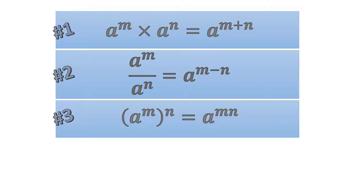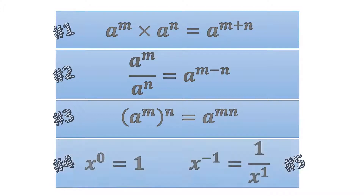Our fourth and fifth rules work in tandem with each other. The fourth states that x to the power of 0 equals 1, and the fifth states that x to the power of minus 1 equals 1 divided by x to the power of 1.